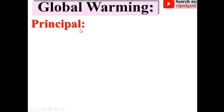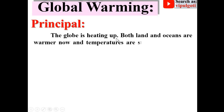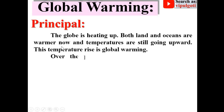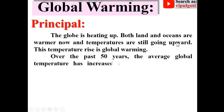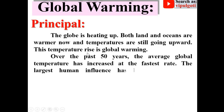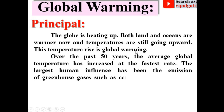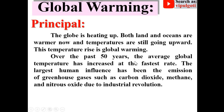Global Warming Principle: The globe, that means Earth, is heating up. Both land and oceans are warmer now and temperatures are still going upward. This temperature rise is called Global Warming. Over the last 50 years, the average global temperature has increased at the fastest rate. The largest human influence has been the emission of greenhouse gases such as carbon dioxide, methane and nitrous oxide, due to the industrial revolution.